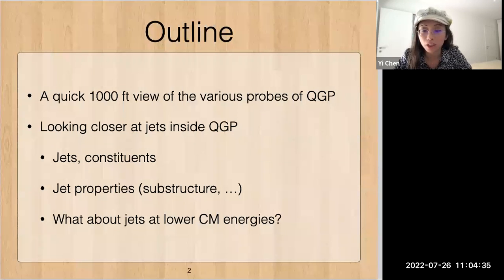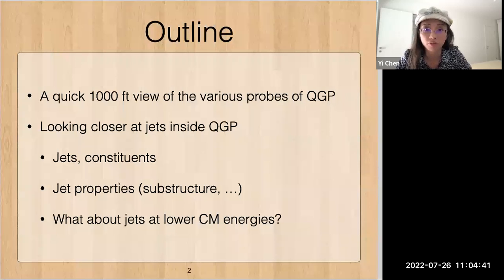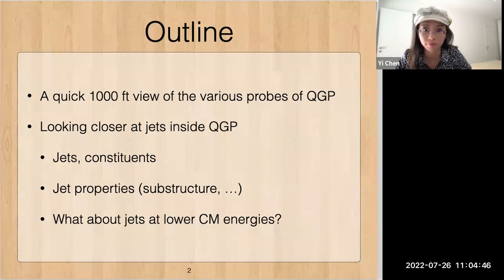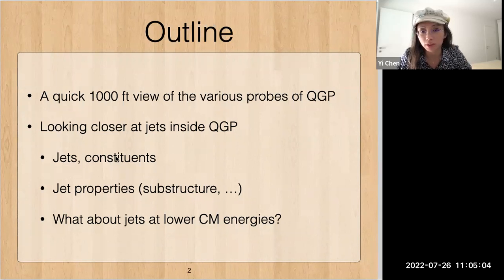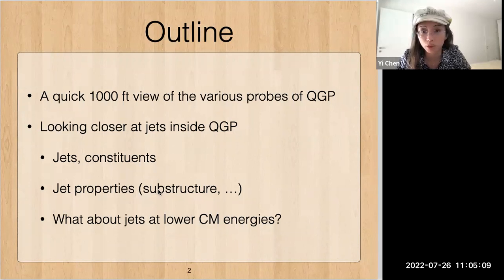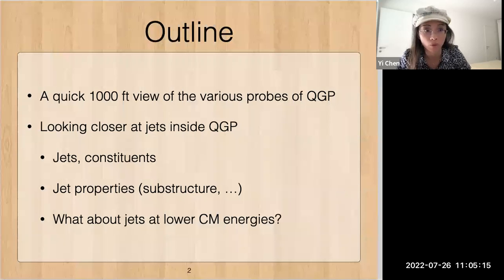Here's the outline of what I will talk about. First, I will have a very quick 1000-feet view of the various probes of QGP — what are the probes that people are looking at. Then the majority of the talk will be focusing on jets, because that's one of the big subjects that the JETScape collaboration is involved in. We will talk about jets, their constituents, some jet properties like substructure, and finally some notes on objects at lower center-of-mass energy and how we can learn about them.